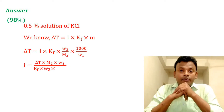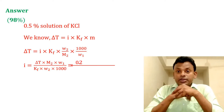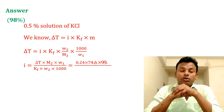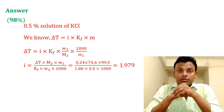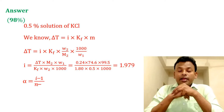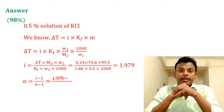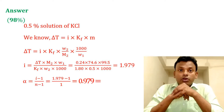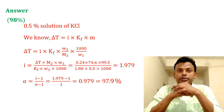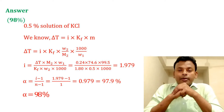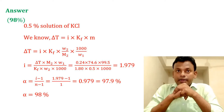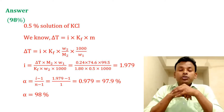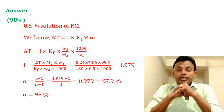For dissociation, α = (i − 1)/(n − 1), where n equals 2 for KCl. Putting the value of i, alpha equals 0.98, so 98 percent. Answer is 98.